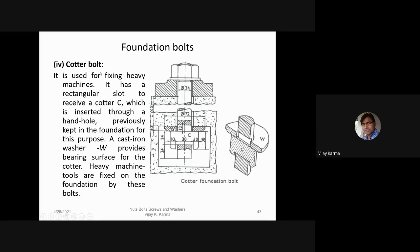The cotter foundation bolt is used for fixing heavy machines. It has a rectangular slot to receive a cotter, which is inserted through a wind hole previously kept in the foundation for this purpose. A cast iron washer provides the bearing surface for the cotter. Heavy machine tools are fixed on the foundation using these bolts.